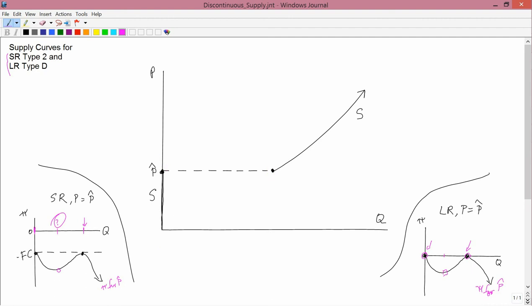I want to draw out an implication for this, which I've never seen any intermediate micro textbook draw out. If you have a supply curve like this, which we've seen is certainly understandable, both in short run type 2 and in long run type D, you have this kind of supply curve. What happens if your demand curve looks like this? Now, we haven't studied explicitly supply and demand, but all of you have taken principles and you know that market equilibrium occurs where supply equals demand.